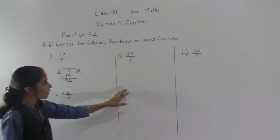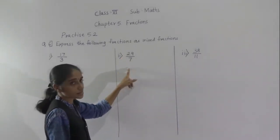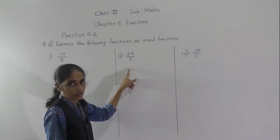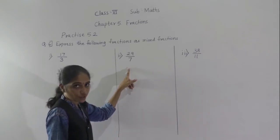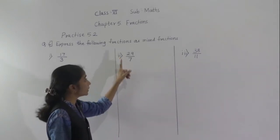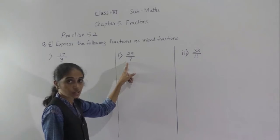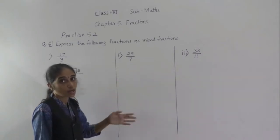Let's solve our next example: 29 upon 7. This is an improper fraction because the numerator is greater than the denominator.